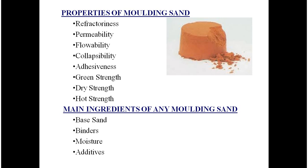The general properties required for molding materials are: refractiveness, permeability, flowability, collapsibility, adhesiveness, green strength, dry strength, and hot strength. We will also discuss the main ingredients of any molding sand: base sand, binders, moisture, and additives. First, we will discuss the properties of molding sand.